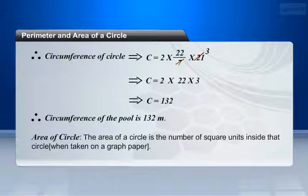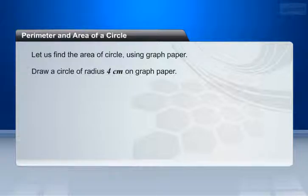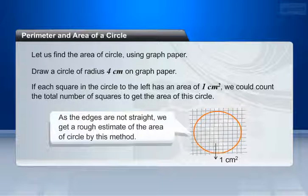Let us find the area of circle using graph paper. Draw a circle of radius 4 centimeters on graph paper. If each square in the circle has an area of 1 cm², we could count the total number of squares to get the area of this circle. As the edges are not straight, we get a rough estimate of the area of circle by this method.